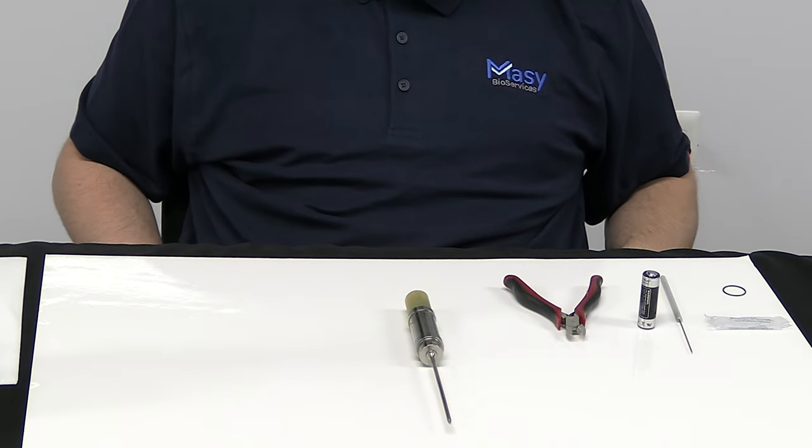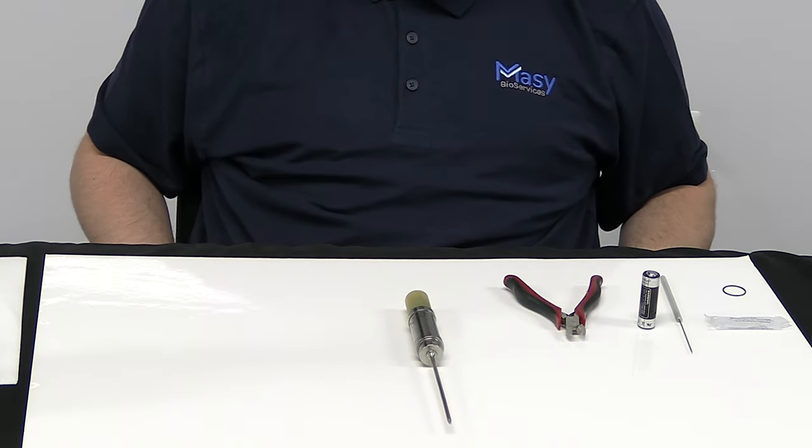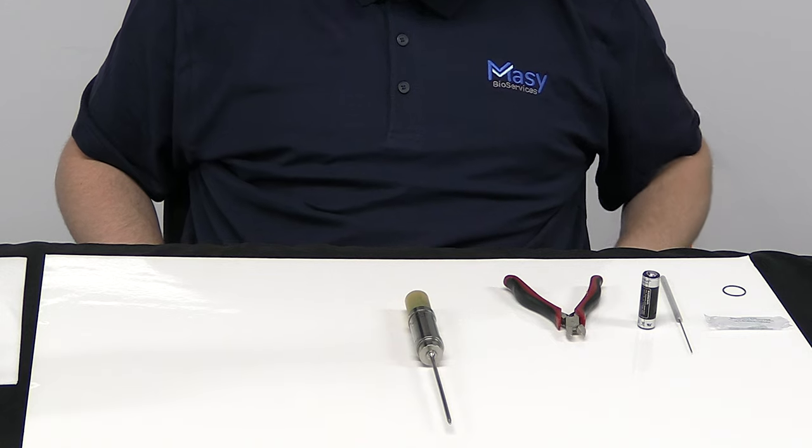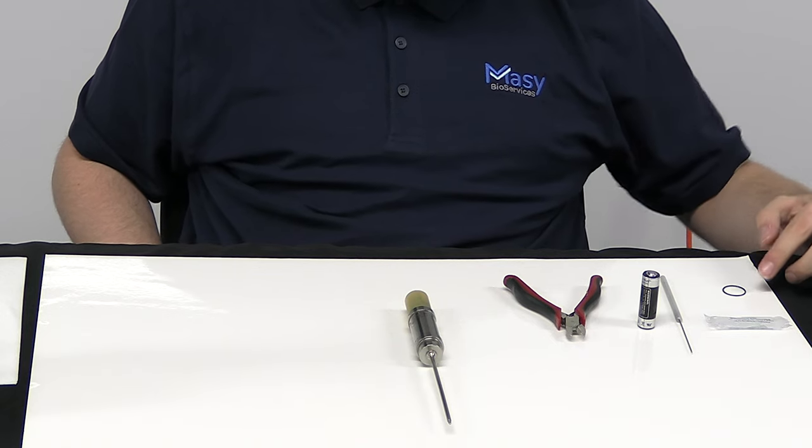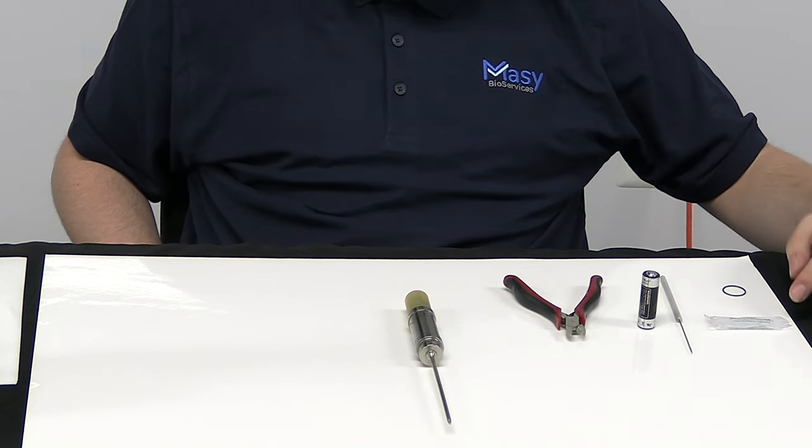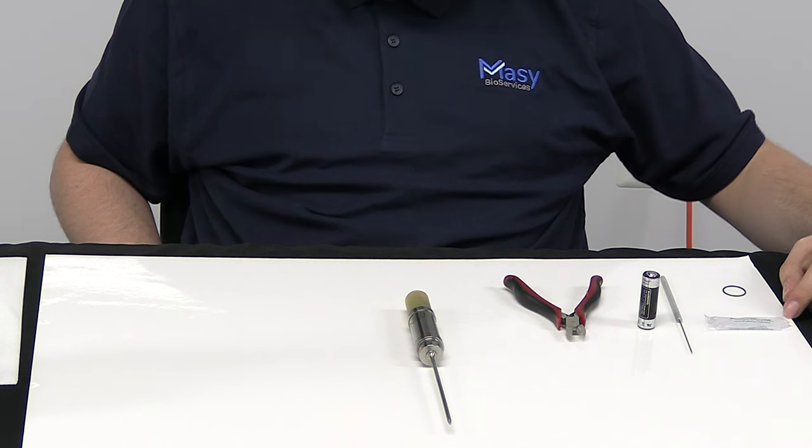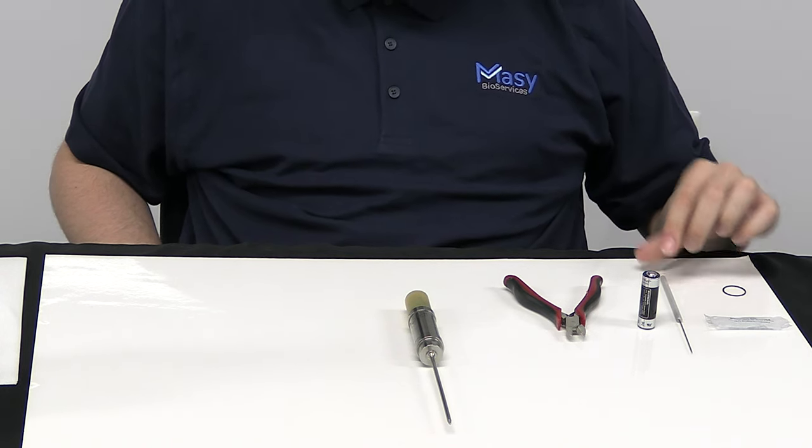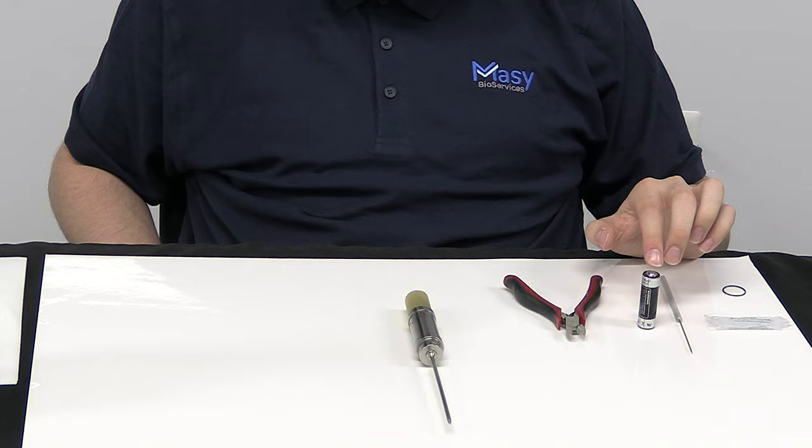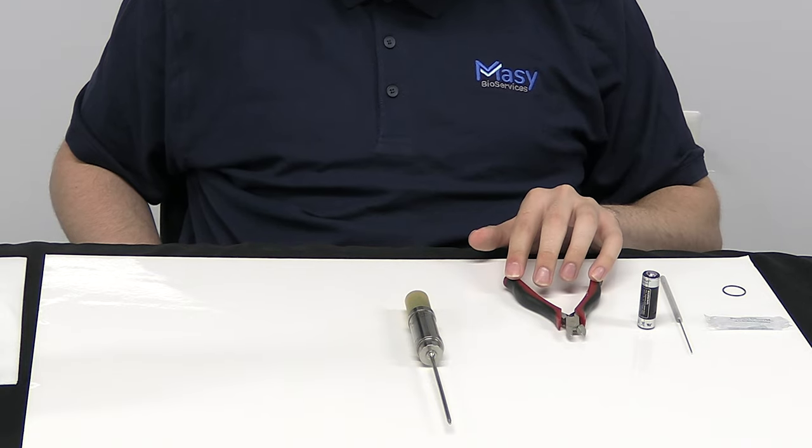Hello, today I'm going to be showing you how to replace the battery on an MPRF data trace unit. The tools we're going to need are a replacement rubber o-ring, a silicone grease packet, a metal pick, a new replacement battery, and a pair of metal clippers.